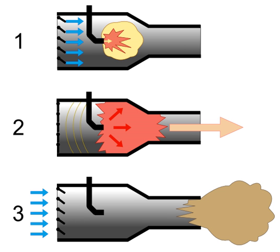Valveless pulsejet engines have no moving parts and use only their geometry to control the flow of exhaust out of the engine. Valveless pulsejets expel exhaust out of both the intakes and the exhaust, but the majority of the force produced leaves through the wider cross-section of the exhaust. The larger amount of mass leaving the wider exhaust has more inertia than the backwards flow out of the intake, allowing it to produce a partial vacuum for a fraction of a second after each detonation, reversing the flow of the intake to its proper direction, and therefore ingesting more air and fuel. This happens dozens of times per second.